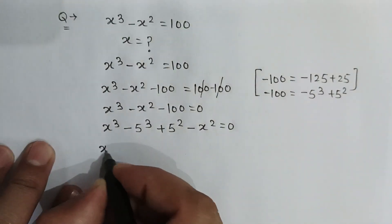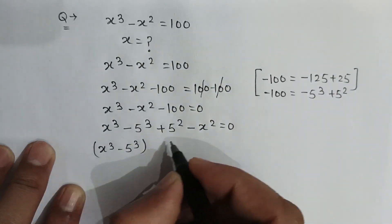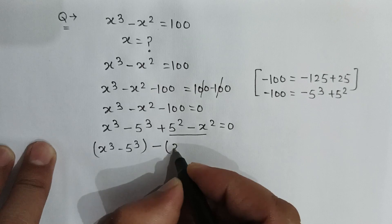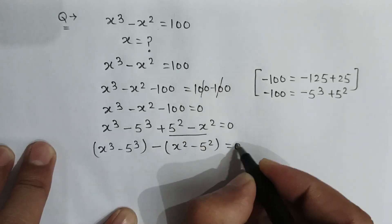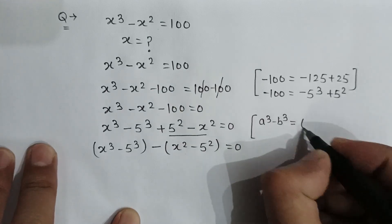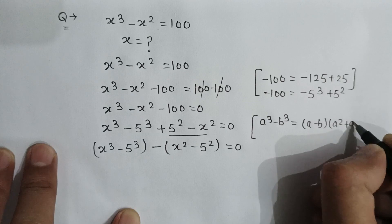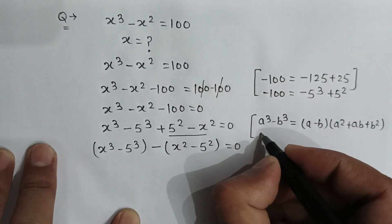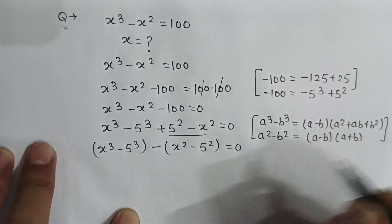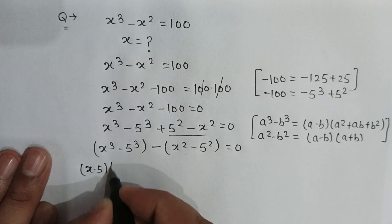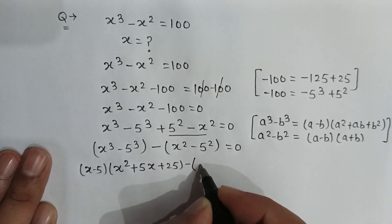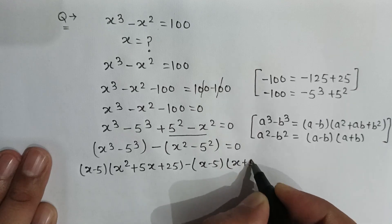So x cube minus 5 cube — if we take the minus sign from these two terms, it will be minus of x square minus 5 square, equal to 0. As we know, a cube minus b cube can be written as (a minus b)(a square plus ab plus b square), and a square minus b square can be written as (a minus b)(a plus b).